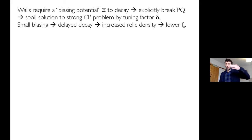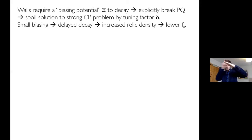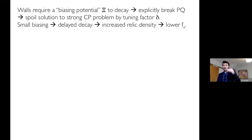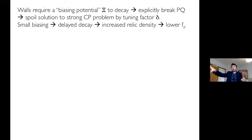In order to make it decay, you require a biasing potential — another explicit symmetry breaking term that tilts the potential so that you can decay over the tops of these domain walls. This explicit breaking of the Peccei-Quinn symmetry will spoil the solution to the strong CP problem by some small amount delta. You would like to not fine-tune the strong CP solution. But if the biasing is only very small, the decay of the domain walls will take a very long time. The later these networks decay, the more energy density goes into axions. Thus the lower you have to make the decay constant to not have too much dark matter. The danger is too much dark matter unless you bias the potential strongly, but if you bias it too strongly you spoil the solution to the strong CP problem.